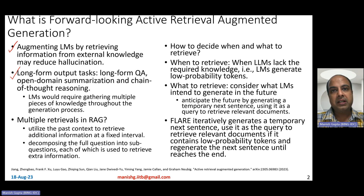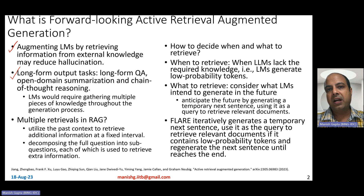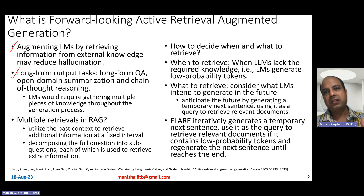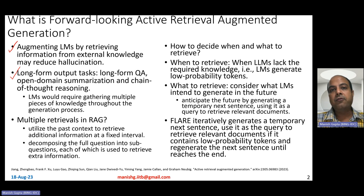Language models would require gathering multiple pieces of knowledge throughout the generation process. When you have to generate something which is long, you have to basically get more and more pieces of information. For example, let's say you're summarizing a large document on Mahatma Gandhi — a Wikipedia document — then you have to talk about birth, education, movements, participation, South African movements, and so on. Step by step, you have to bring in one more aspect and put it in the final output. Can we solve these long-form generation tasks better using retrieval augmented generation?